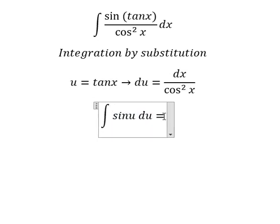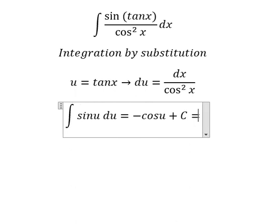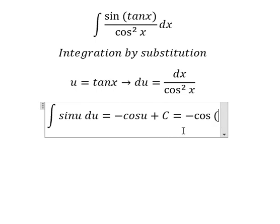The integration of this one we have negative cosine u. And then we put the constant c. u is tan x.